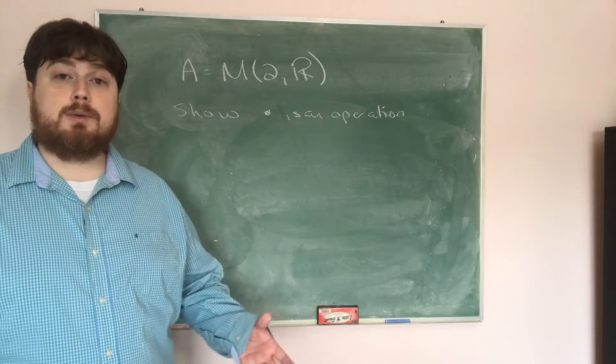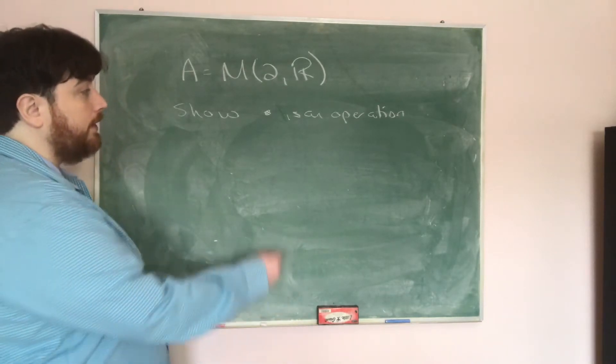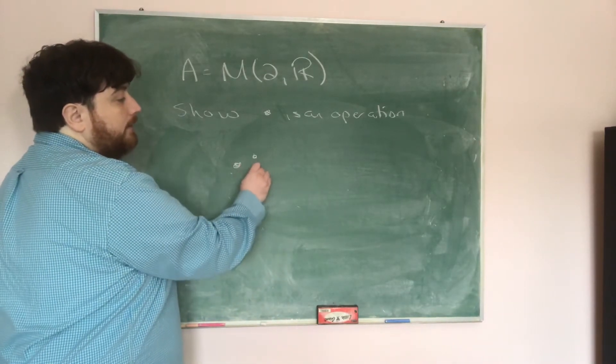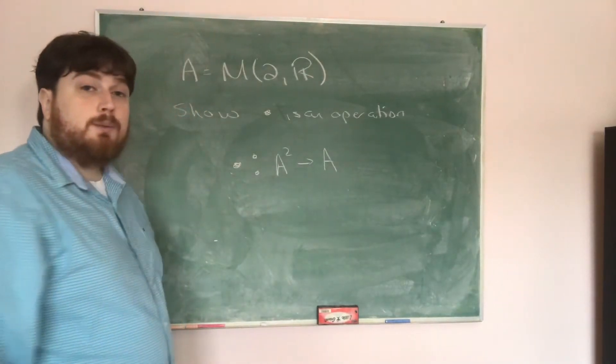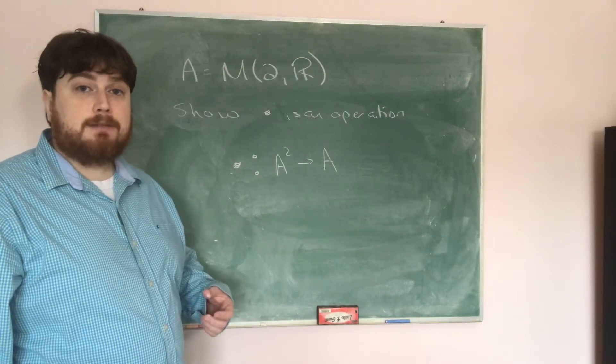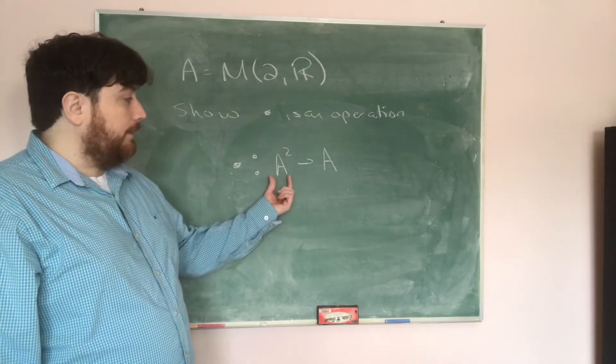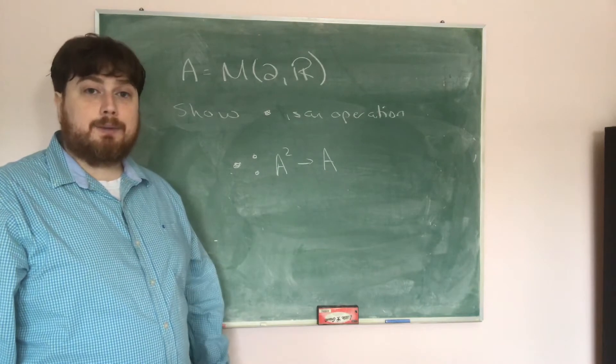In order to show it's an operation, what we need to do is show that if we consider it a mapping from A squared to A, then this should be a well-defined mapping. That is, everything in the domain gets mapped to exactly one thing in the range.